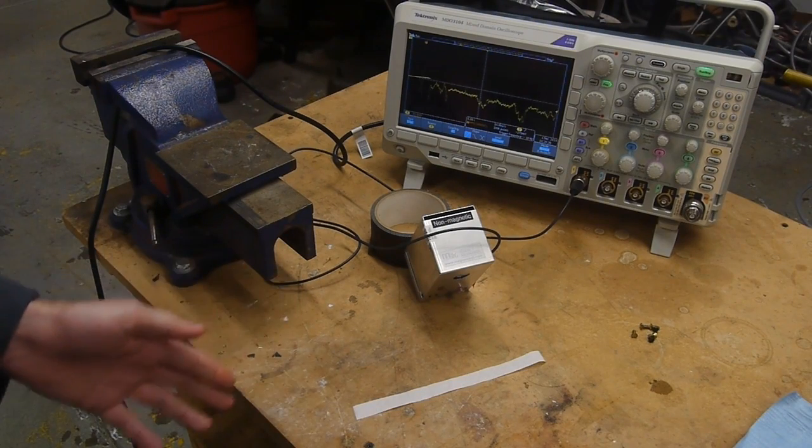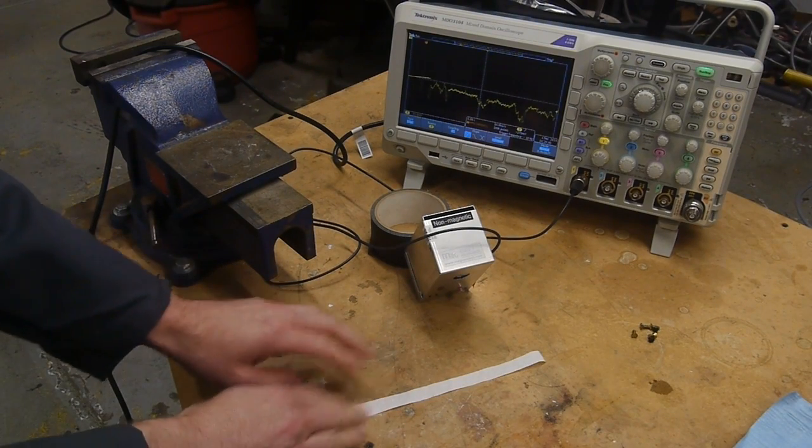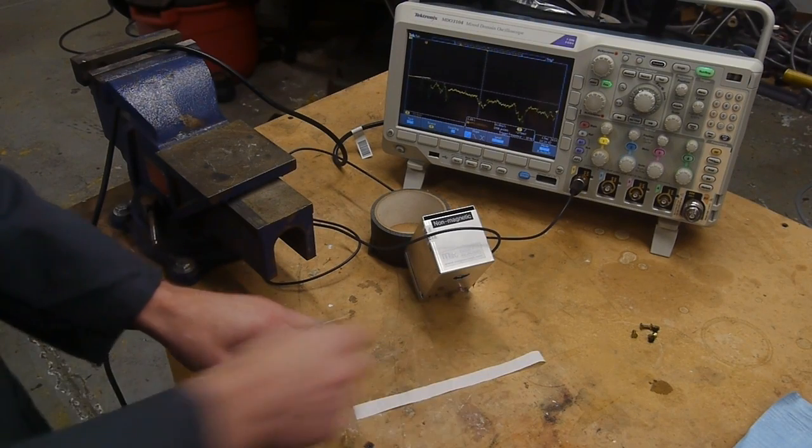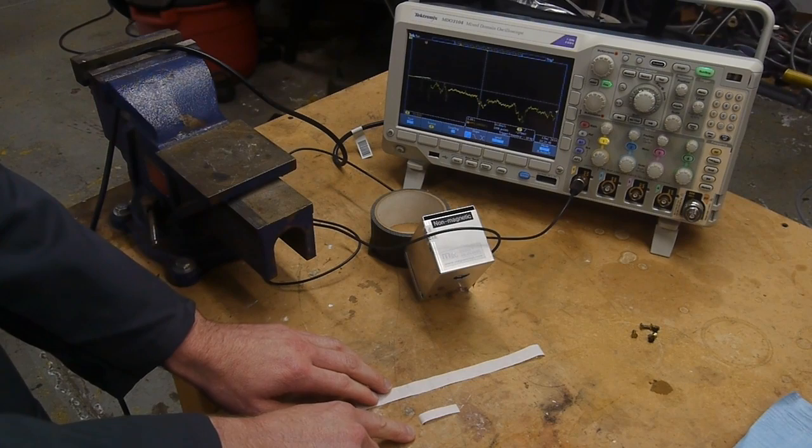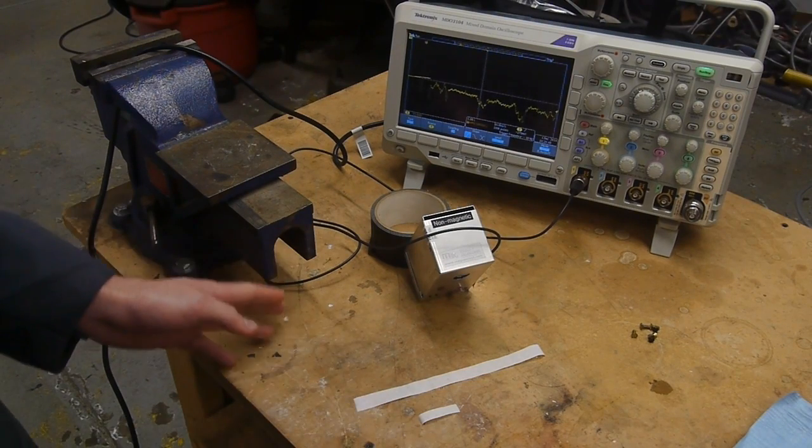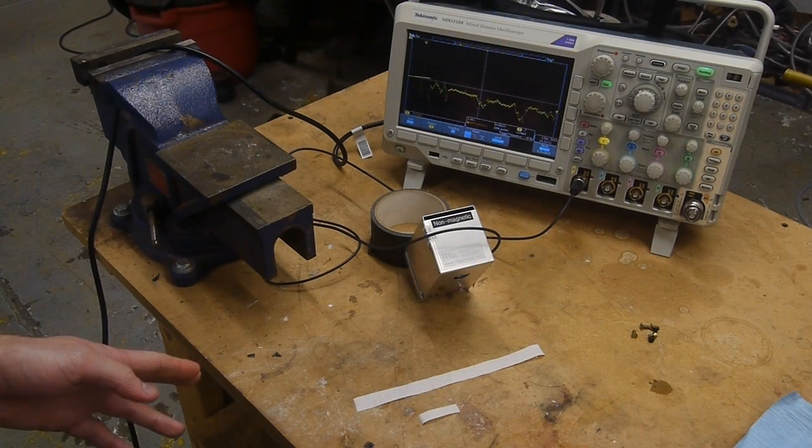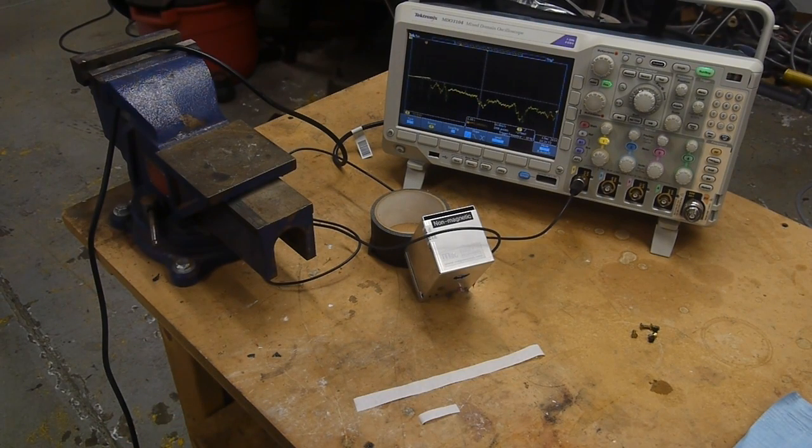So I thought it might be possible to have information encoded into a strip by giving it a certain tab pattern, and then laying it next to another strip with its own tab pattern, and by setting the whole thing on fire there might be some sort of an interesting computation. And I thought about this for quite a while and I'm not sure it's actually possible.